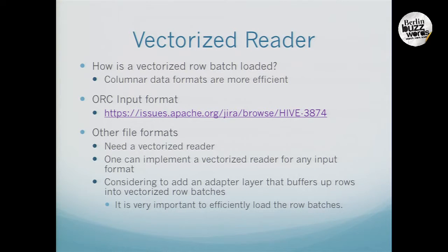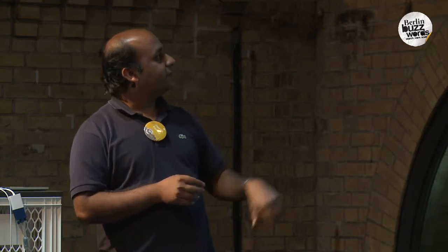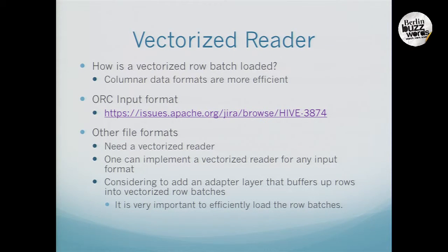For this whole approach to work, we need row batches, and those come from the reader that reads data and populates the batches. If the reader is not efficient, all the CPU optimizations are useless — Amdahl's law kicks in. It is very important that we efficiently load the data. Columnar formats naturally work much better for populating row batches because the row batch is essentially a columnar format. ORC is the format we support right now. For other formats it is also possible, since Hive is designed for flexibility — all we need is to implement a vectorized reader for any format, though there will be performance implications if the reader cannot be implemented efficiently.